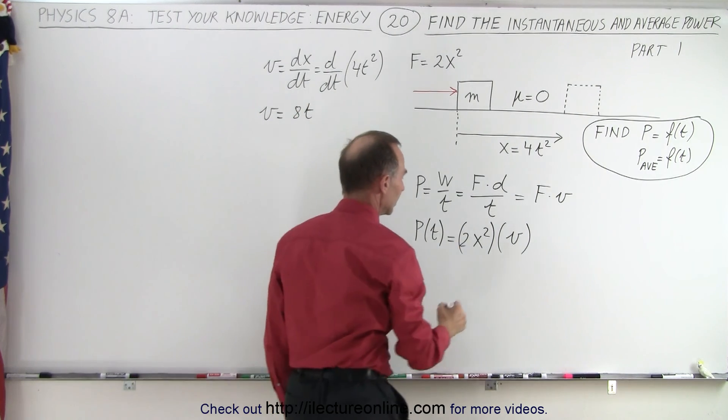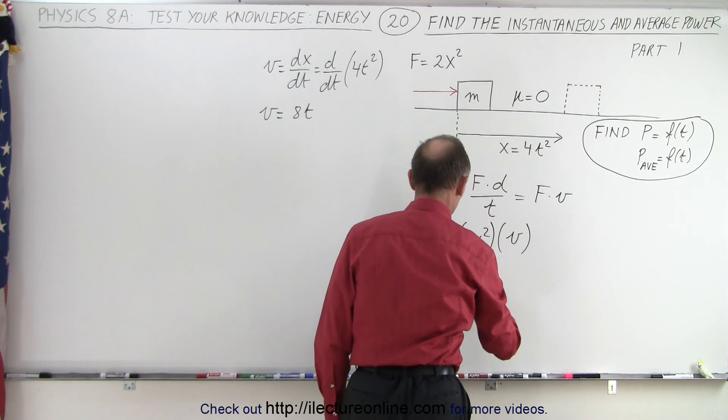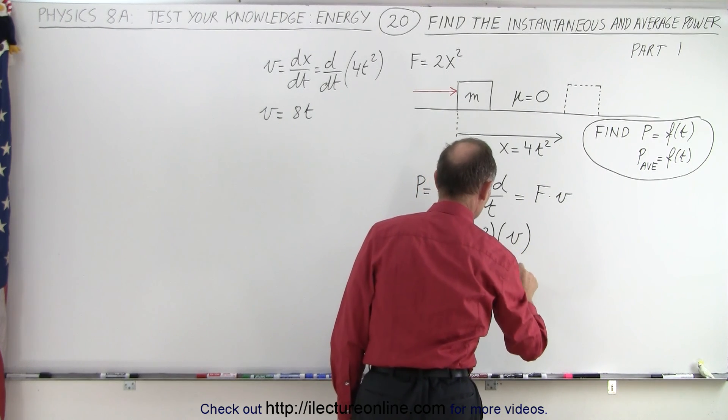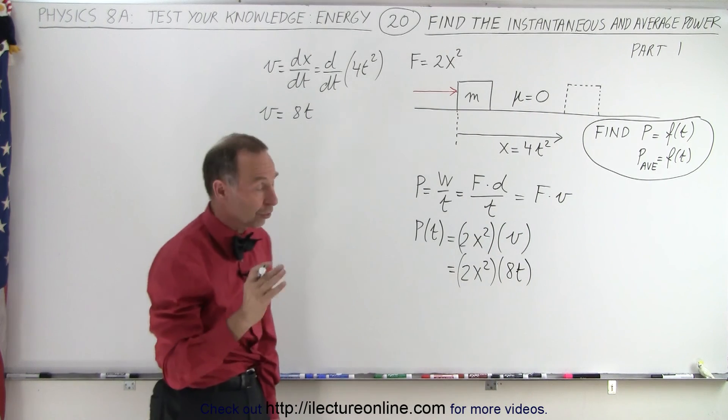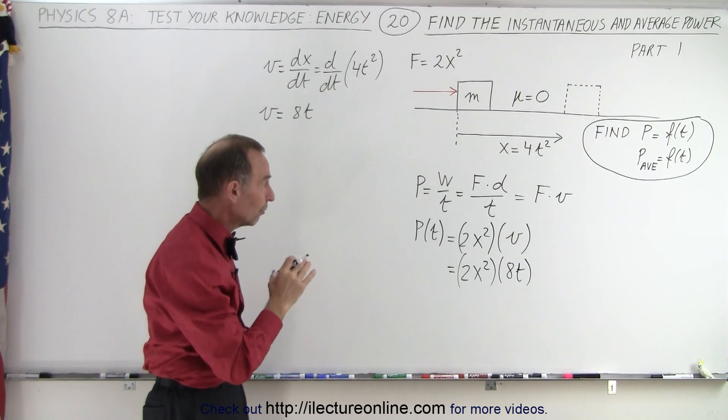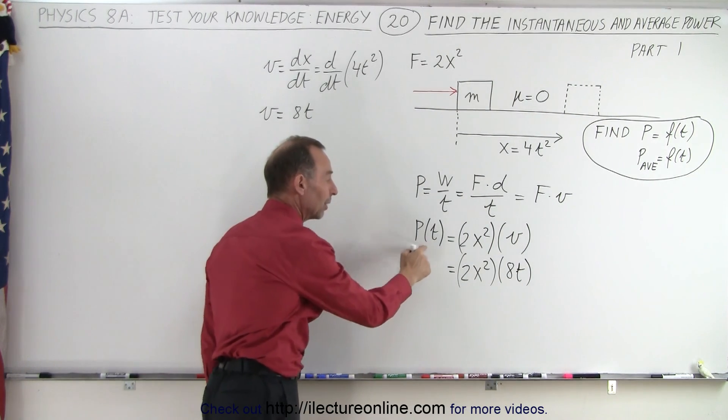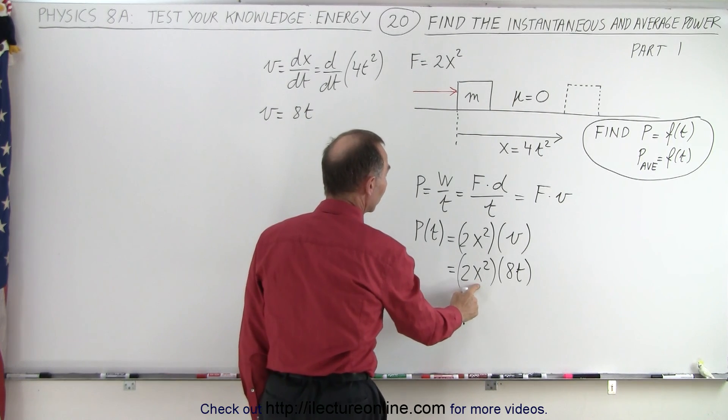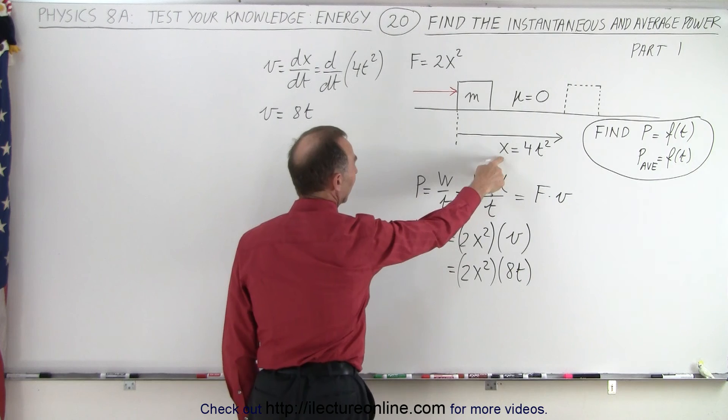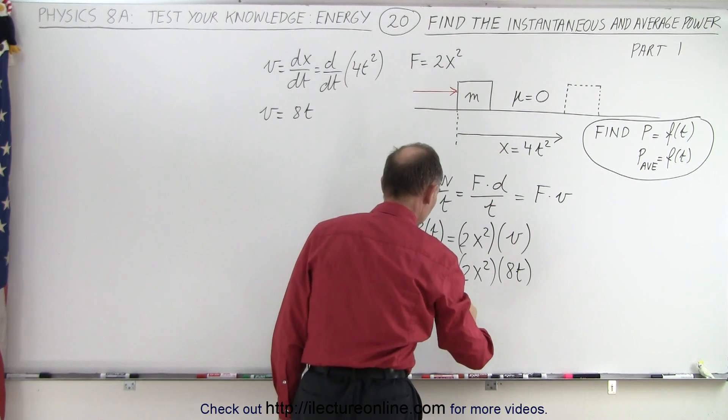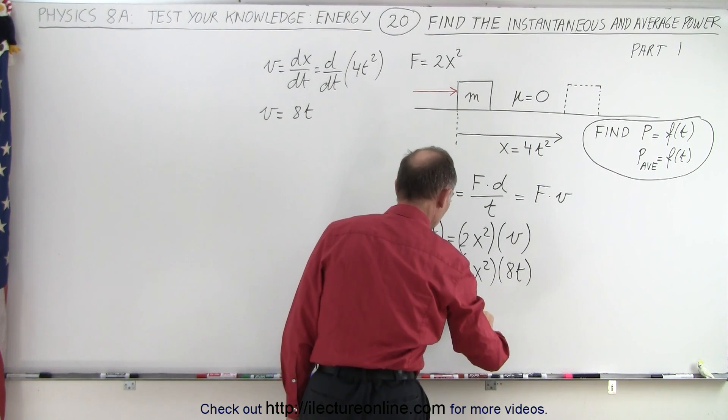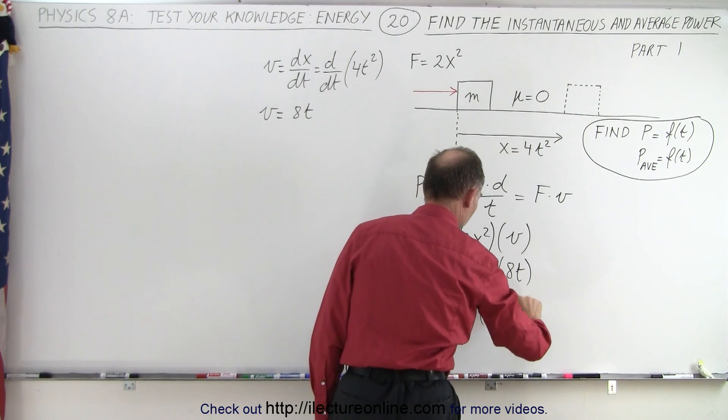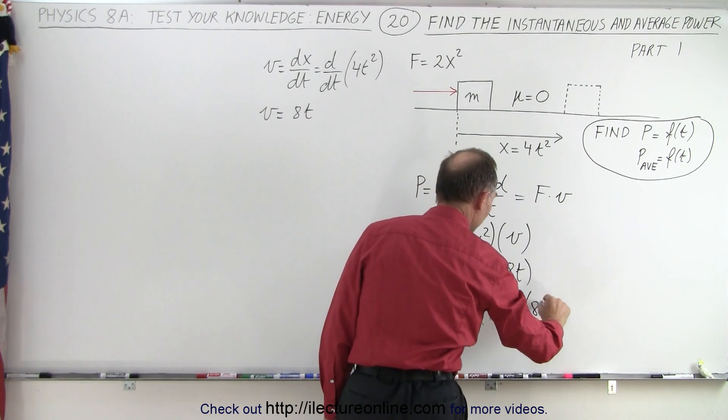So we can go ahead and plug that in here. This is equal to 2x squared multiplied times v, which is 8 times t. Now notice, the velocity was in terms of time, but the force wasn't. And we want power as a function of time, which means we need to convert this in terms of time. But notice that x is equal to 4t squared. So this can be written as 2 times the quantity 4t squared squared times 8t.